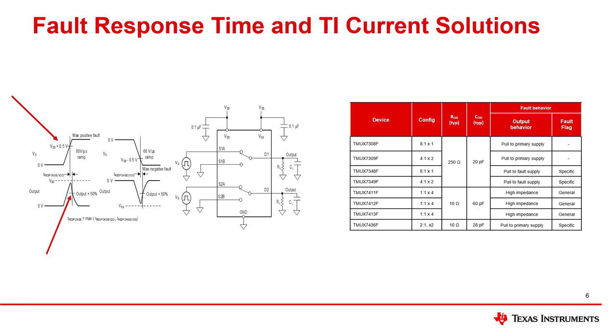This feature and many others make the TMUX7436F, or any TI fault-protected multiplexer, an ideal solution for factory automation applications that may face various fault conditions, but also require excellent linearity and low distortion. The graph to the right shows current TI solutions with detailed information on configurations and other useful information like RON, CON, and fault behavior. Some TI fault-protected multiplexers, like the TMUX7436F, include additional overvoltage detection in the form of fault flags on the FF and SF pin.